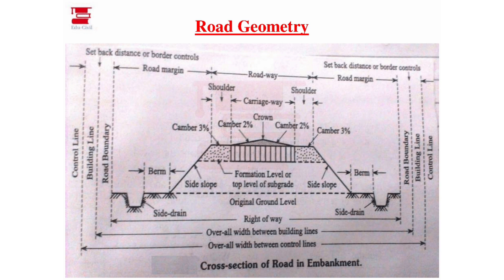We have two road types: one embankment and one cutting. We call it embankment when the road is above ground level, and cutting when it is below ground level.